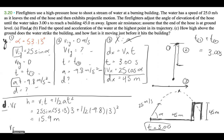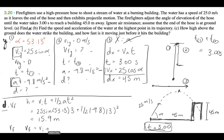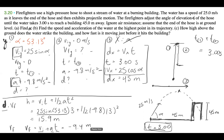For VF, we have time, acceleration, and VIY, so we can use VF equals VI plus A times T. Plugging in the values, I get minus 9.4 meters per second. That makes sense because the water is moving downwards when it hits the building.